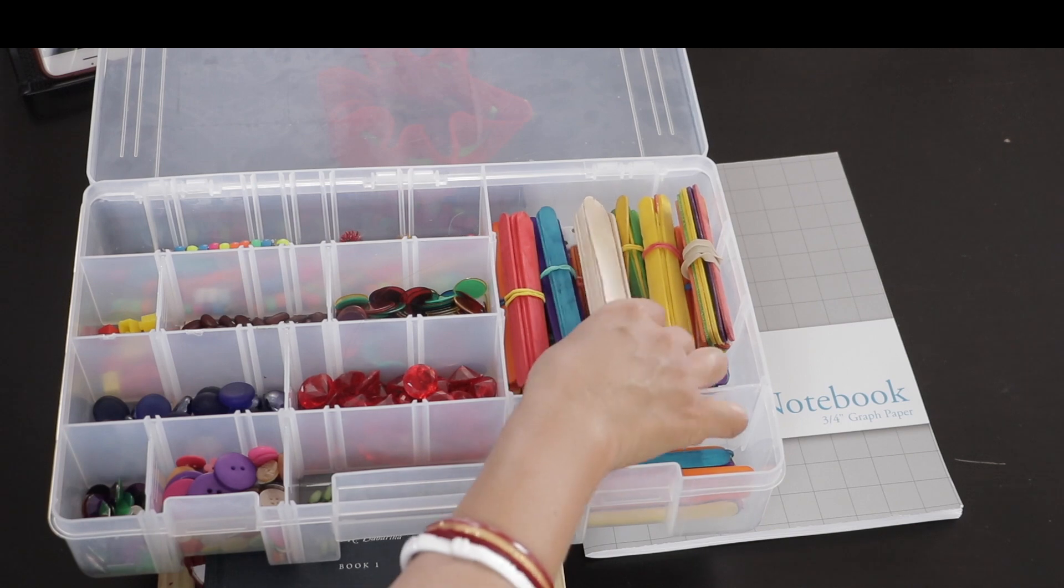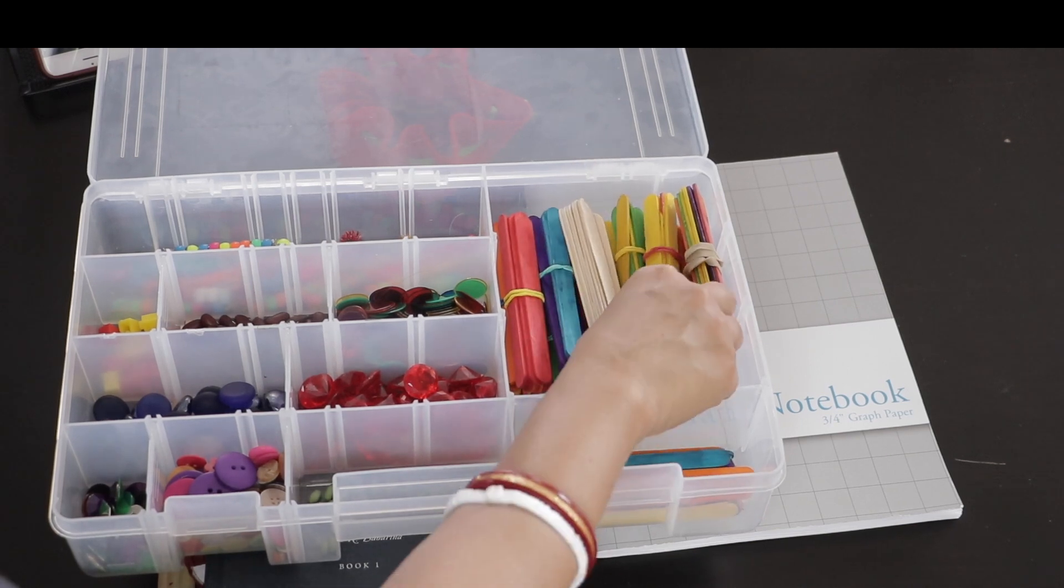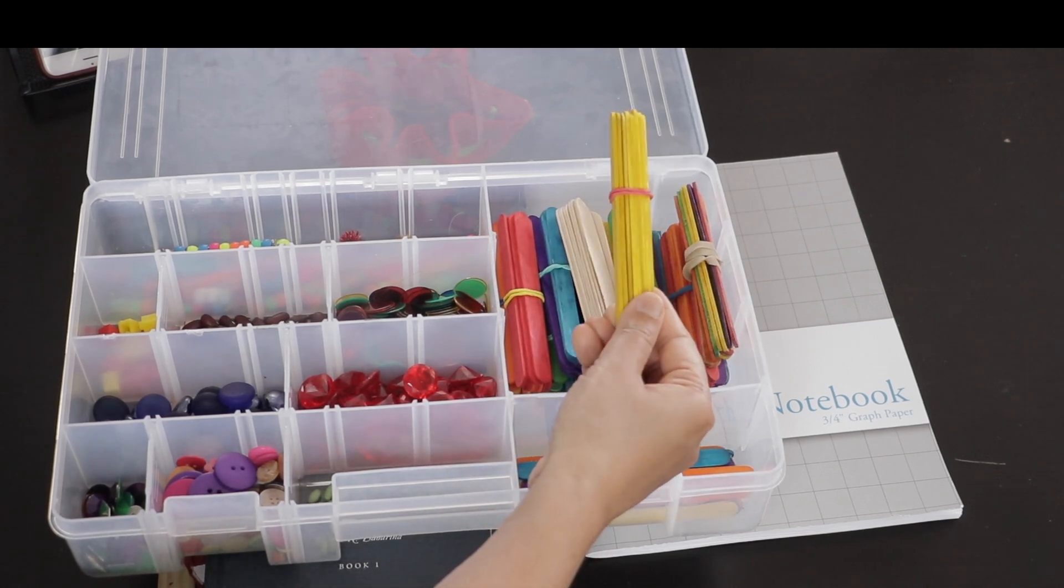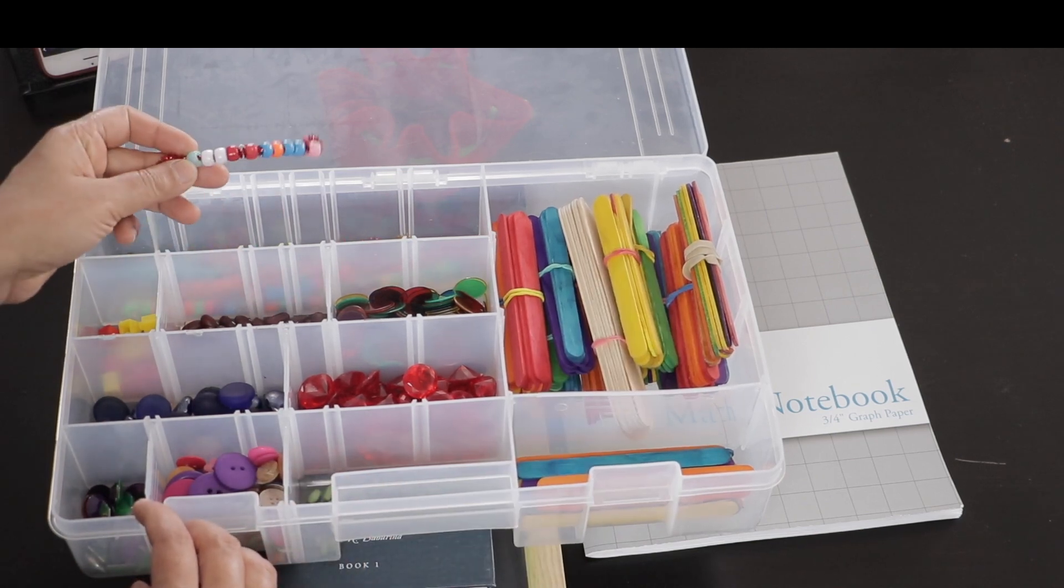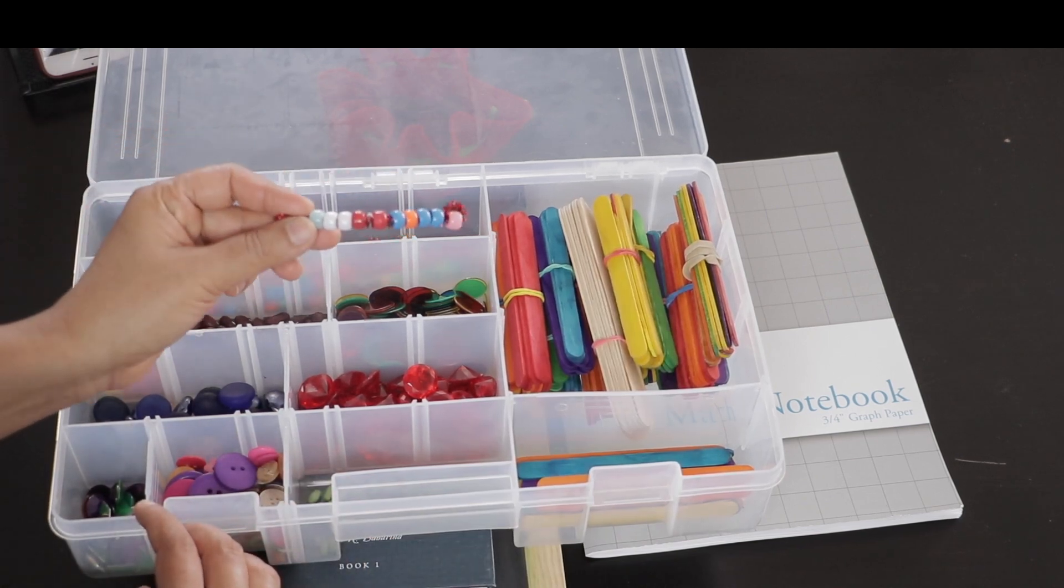Here is how I store the manipulatives. These are popsicle sticks or craft sticks tied in tens bundles as asked to do in the book. Similarly these beads are in tens too.